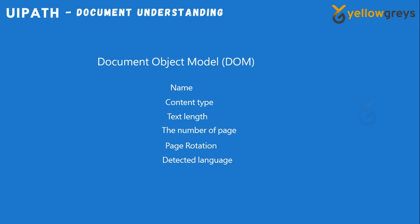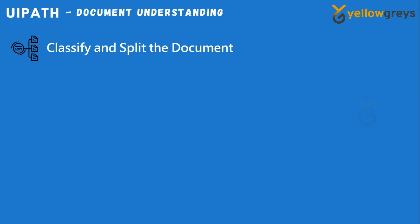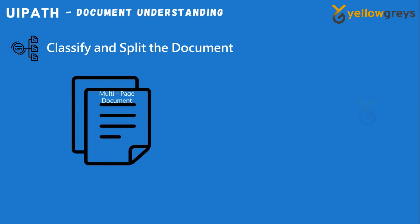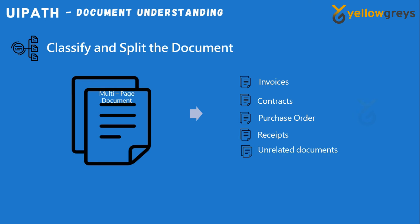The next step is Classify your document. Your file may contain a variety of document types such as invoices, contracts, purchase orders, receipts, and unrelated documents. A list of all component document types is returned along with any fields they may include. We will split and classify the documents according to the process requirements.